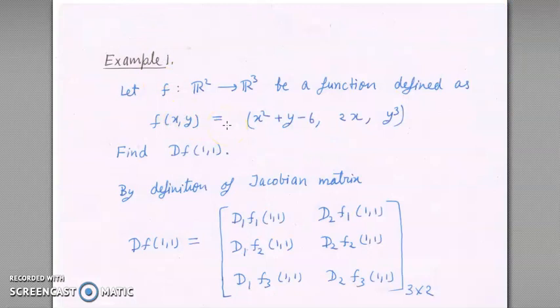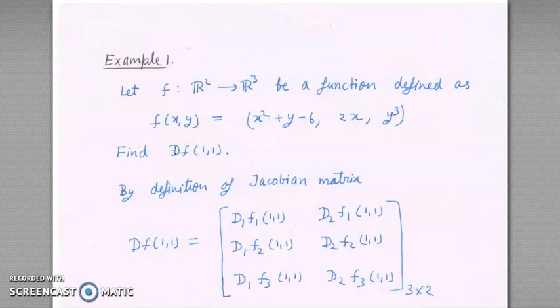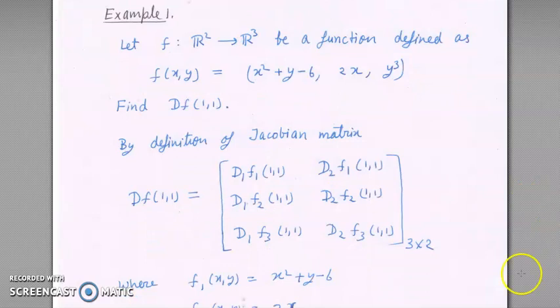Example 1: suppose f is a function from R2 to R3 defined by f(x, y) = (x² + y − 6, 2x, y³). We are to determine the Jacobian matrix Df at the point (1, 1). Since f is from R2 to R3, it has three components f1, f2, f3, and the Jacobian will be a 3×2 matrix.